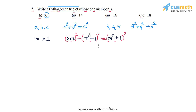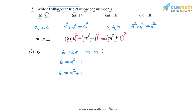Starting with part 1, we have the number 6. We check each expression: if 6 = 2M, then M = 3, which is an integer value. If 6 = M² − 1, then M² = 7, which does not give an integer value for M. If 6 = M² + 1, then M² = 5, which also does not give an integer value for M.